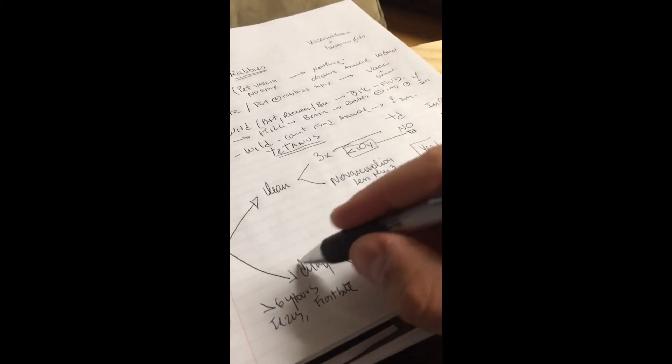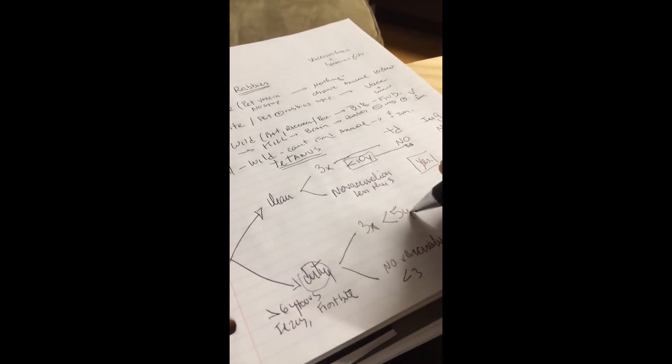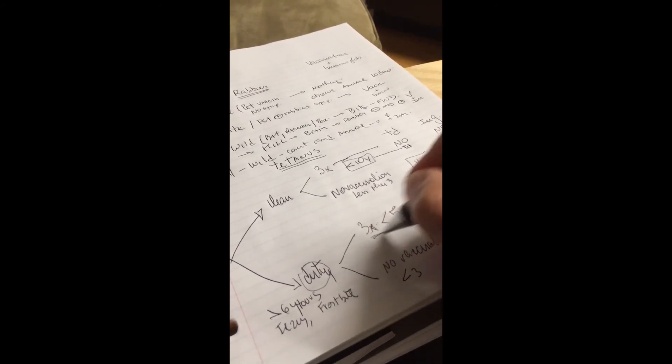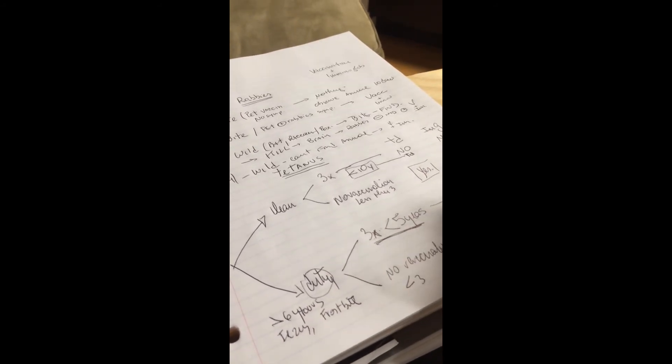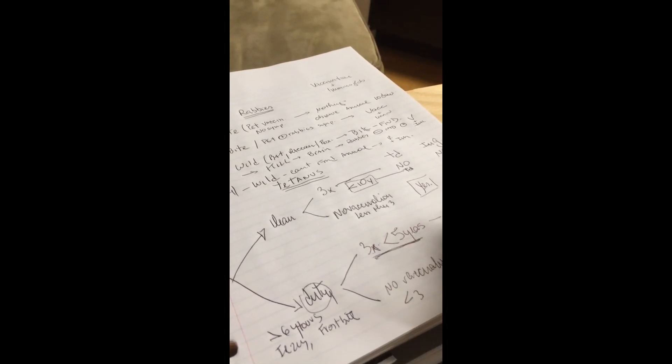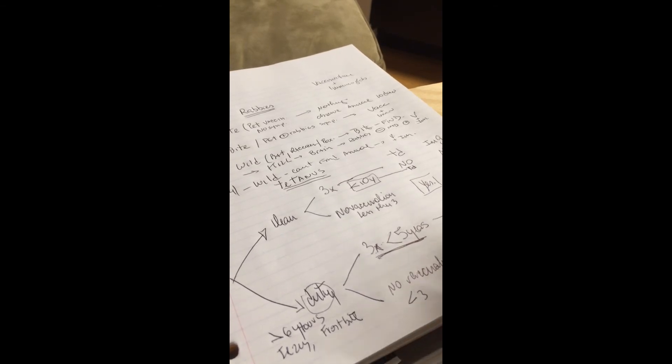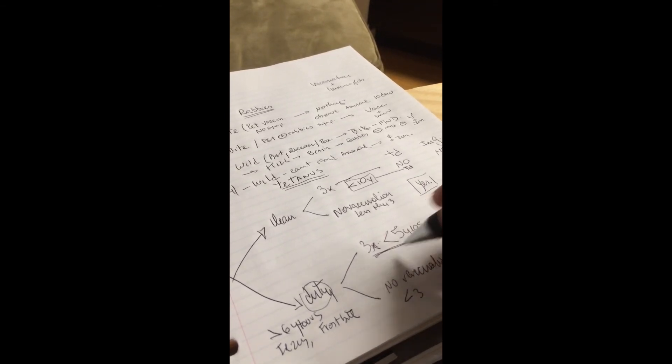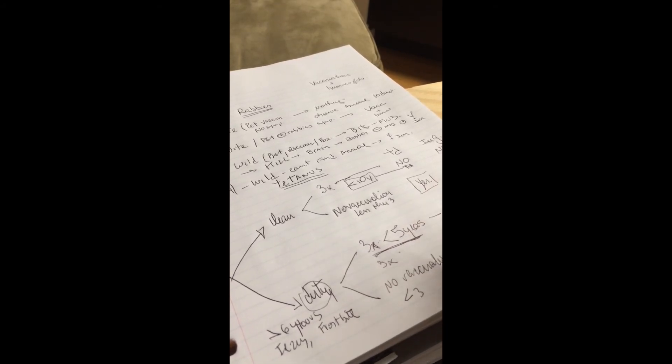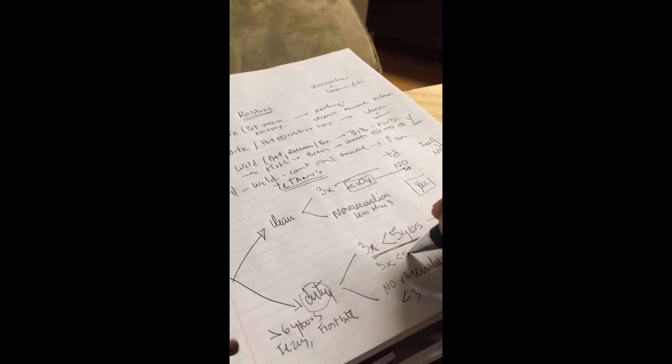On the dirty wound: if you had three times vaccination but it was less than five years ago, you need to give the vaccination, no immunoglobulin. If you had three times and it was less than five years ago.